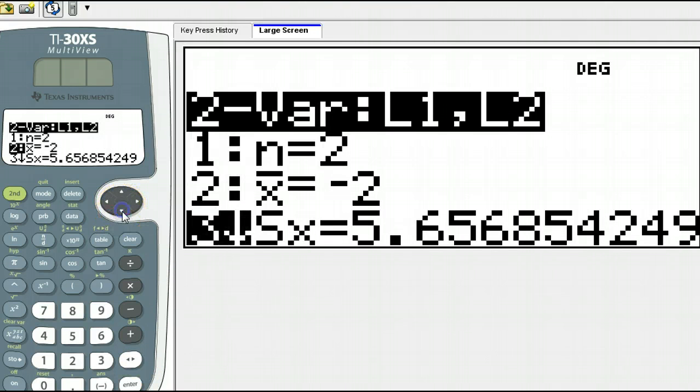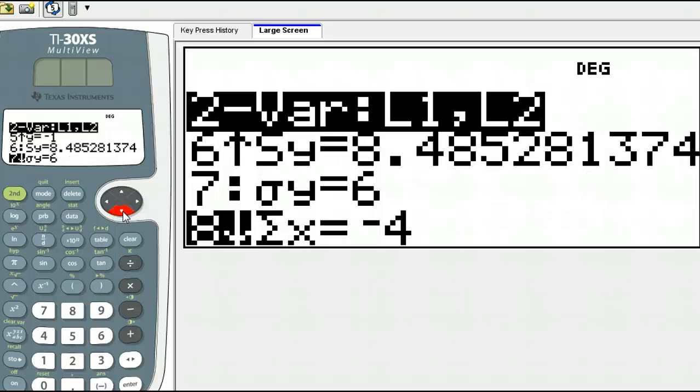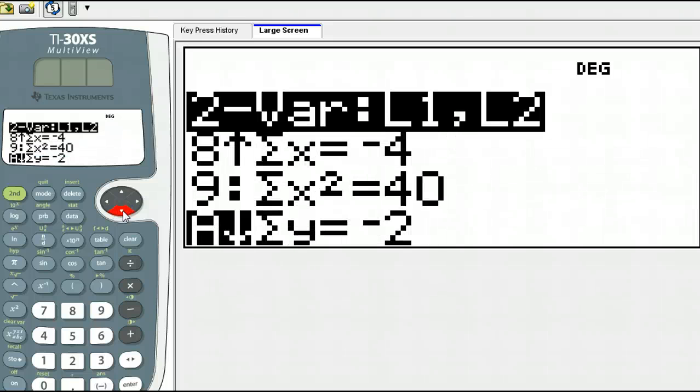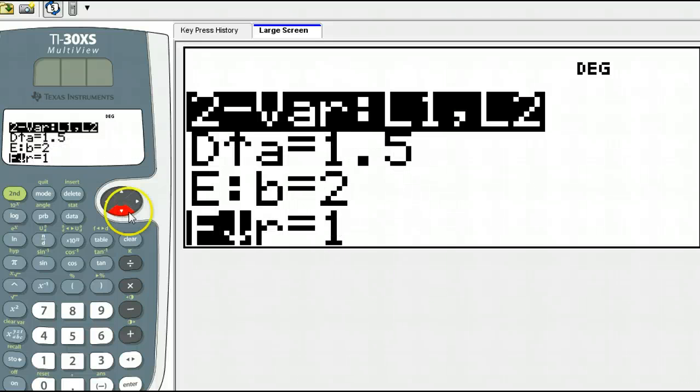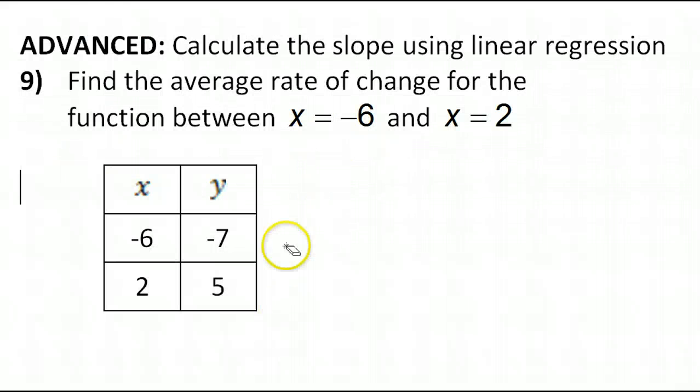Now the rate of change is the slope. If you scroll down, the slope is on this list. Scroll down till you have your A, B, and R. Remember Y equals MX plus B? Well, this A value is like your M, and B is still your B. So we actually have an entire equation here, Y equals 1.5X plus 2.